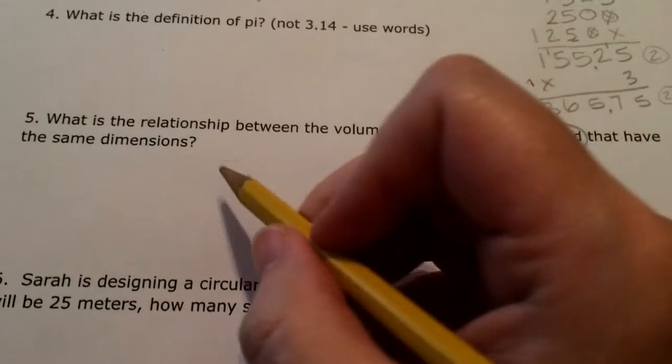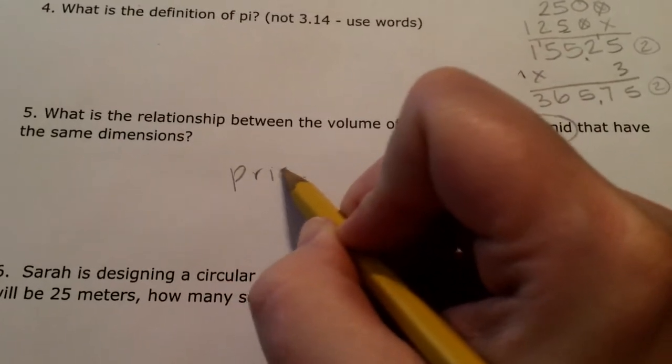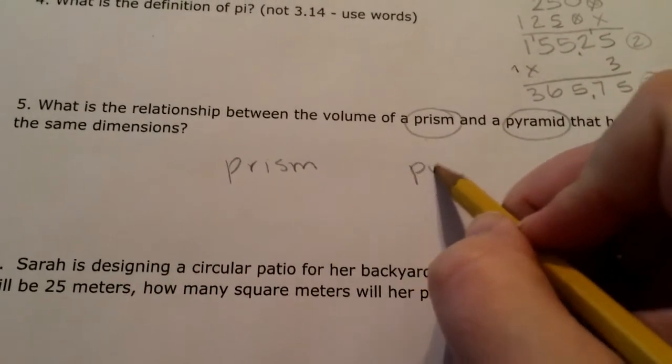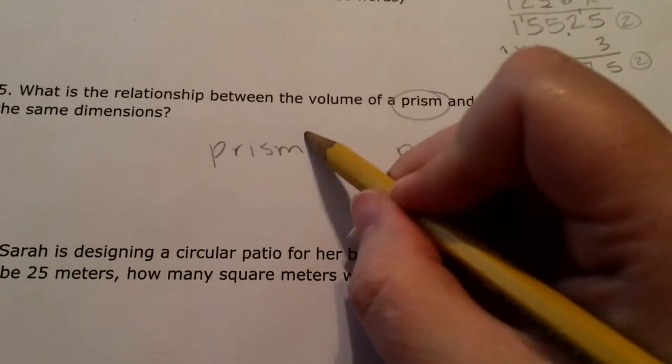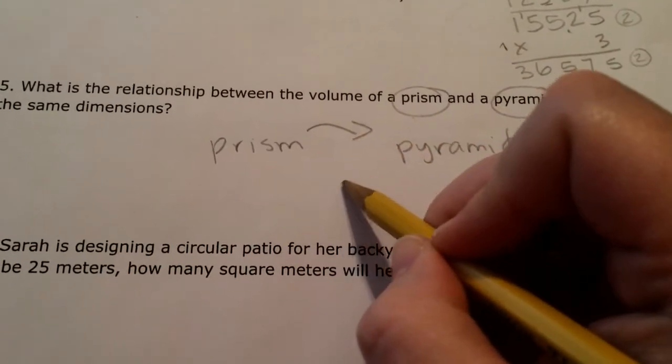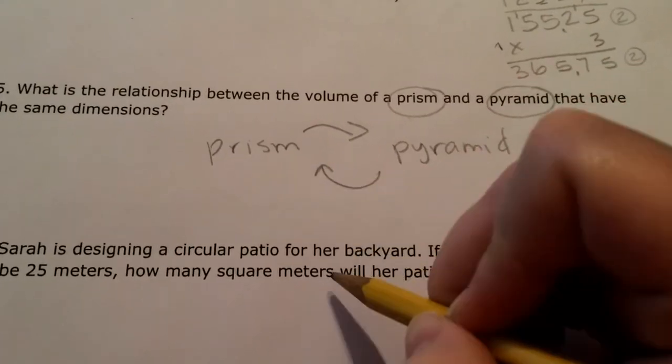And I remember when Ms. Thornton came and saw us that day, she wrote the words prism and pyramid on the board. She even drew arrows, comparing the two.